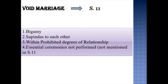As we have already discussed in the previous video, the valid conditions for any marriage to be subsistent — Section 5, clause 1 talks about bigamy. Any person who commits bigamy, the second marriage will be void ab initio. Void ab initio means it does not exist from its very beginning. Hence, any person who contracts a second marriage when his first marriage was still subsistent, that second marriage will be void ab initio.